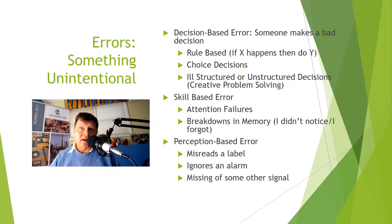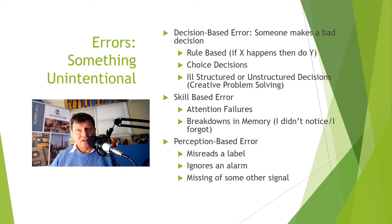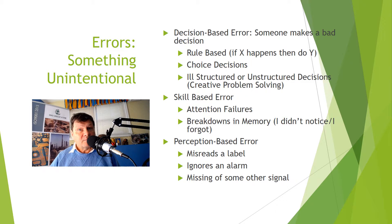Let's talk about errors first. There are three main types: decision-based, skill-based, and perceptual. In a decision-based error, somebody is called on to make a decision and makes the wrong one. There are three subtypes: rule-based decisions (if X happens, do Y), choice decisions which are experience- and training-based, and ill-structured decisions which fall under problem-solving. These three types of decision-making are highly personality-dependent and dependent on the ability of the decision-maker — a whole book could be written just about this area.